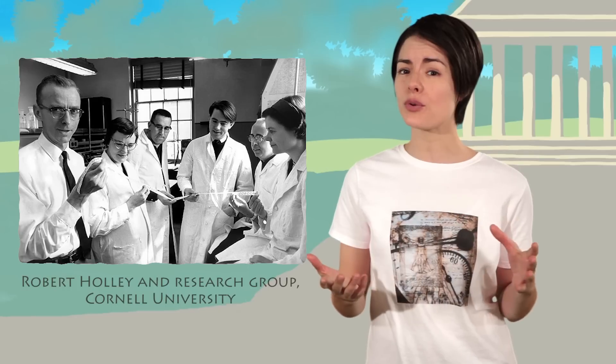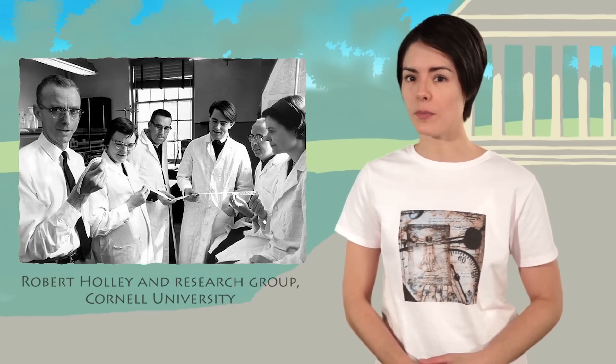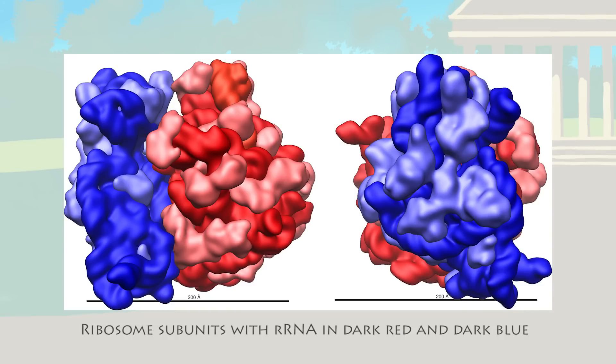Another research group from Cornell won the race to successfully sequence a tRNA molecule, but by 1967, Sanger's group was the first to sequence a molecule of rRNA from a bacterial ribosome.